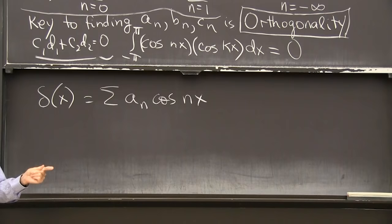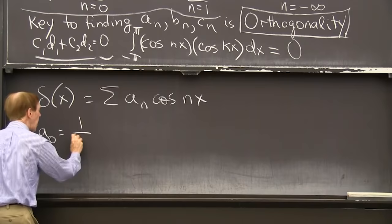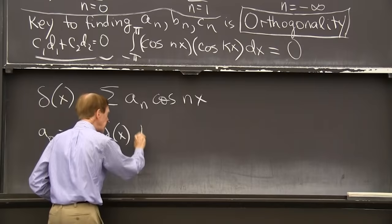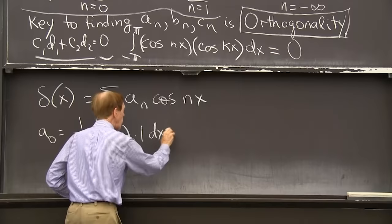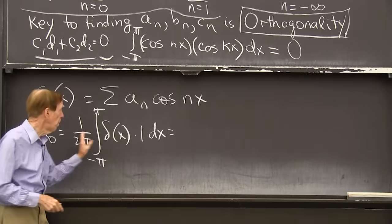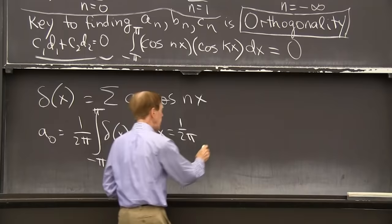OK. That's the delta function between minus pi and pi. OK. And what's our formula for the a_n? Well, you remember we had a special formula for a_0, which was 1 over 2 pi times the integral from minus pi to pi of our function, which is delta, times the basis function, which n equals 0. The basis function is 1 dx. OK, we know the answer to that. We can integrate the delta function.